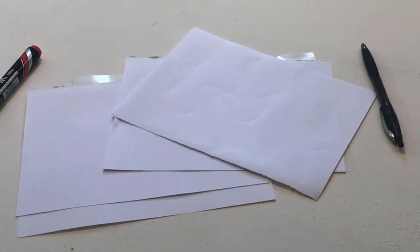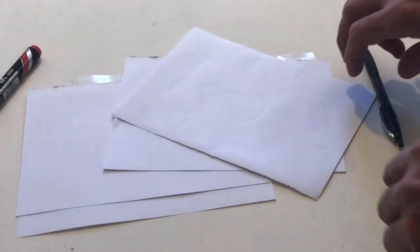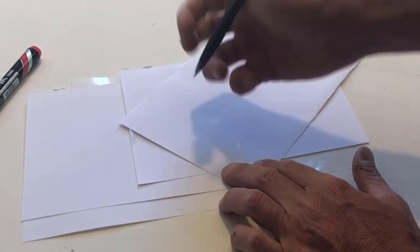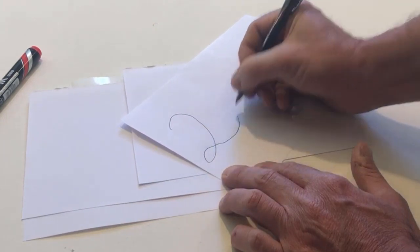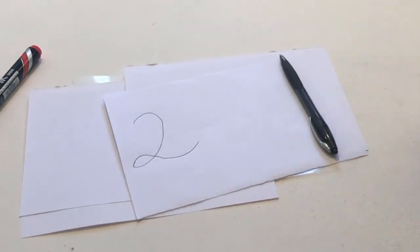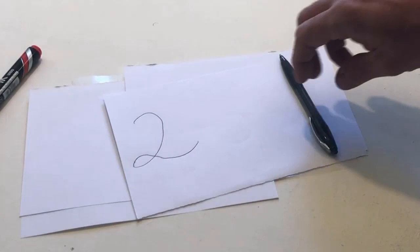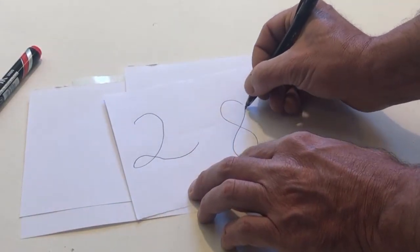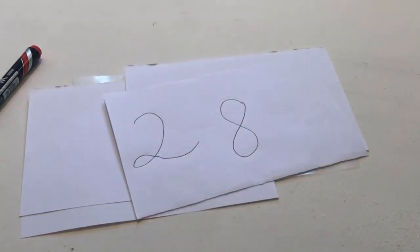Write the number 2 on a piece of paper. Next to the number 2, write the number 8. In between the 2 and the 8, write a multiplication sign.